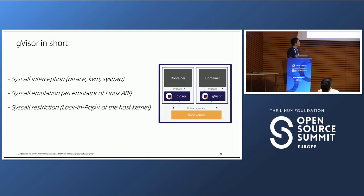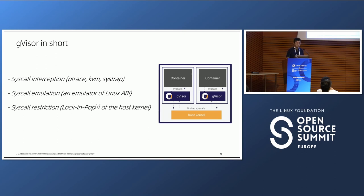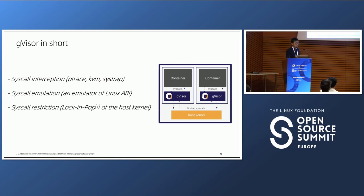So what is gVisor? gVisor actually consists of three things. First, syscall interception — we need to intercept all the syscalls from the application processes into the gVisor guest kernel. There are three platforms to do that in upstream gVisor: ptrace, KVM, and this year a new platform named SysTrap was upstreamed. After interception, gVisor does emulation of the Linux ABI to implement syscalls for applications, mostly written in Go. Finally, gVisor limits syscalls into the host kernel for security — that is syscall restriction.